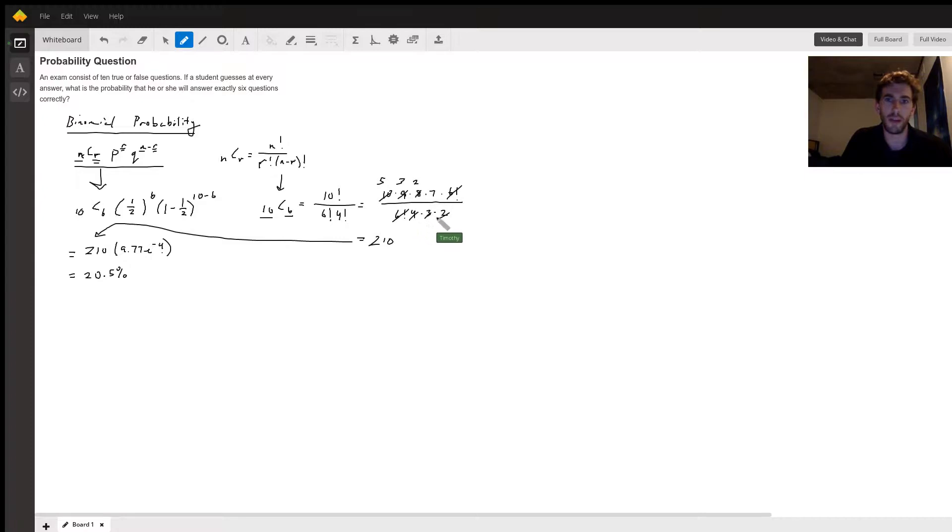In this part, it'll be one-half probability of success to the power of successes, and then the probability of failure, which is 1 minus the probability of success, to the power of failures that you have. Multiply that by 210 and you should get 20.5 percent.